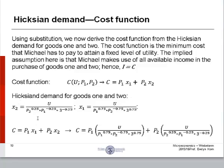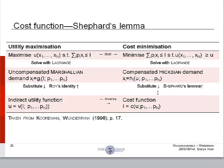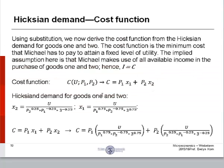Hicksian demand for goods 1 and 2. We're just going to take x2 and x1, substitute it into this function here. That's how we get the cost function. It's not really a big deal. Whereas before when we were working with Marshallian demand, indirect utility was simply taking x1 expressed in terms of income and prices and plugging it into the utility function. Now, take x1 and x2 in terms of utility and prices and we plug it into the cost function. So, it's that simple.